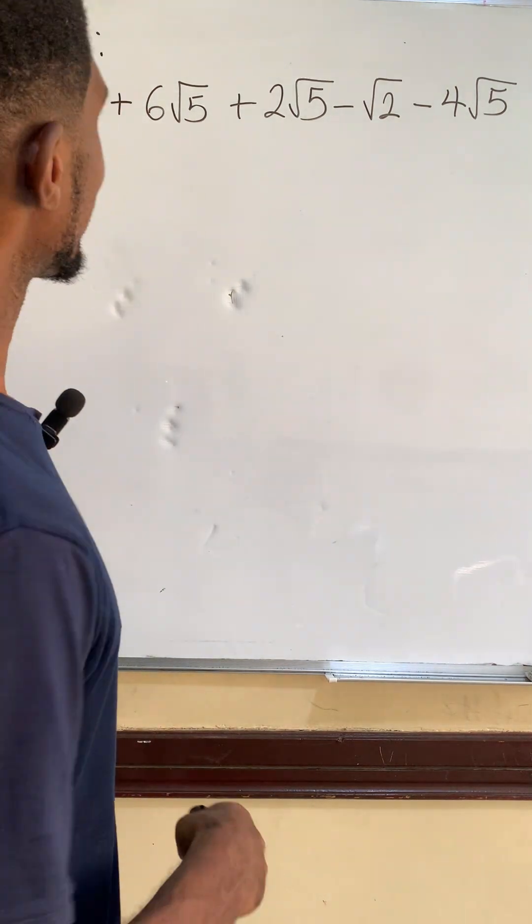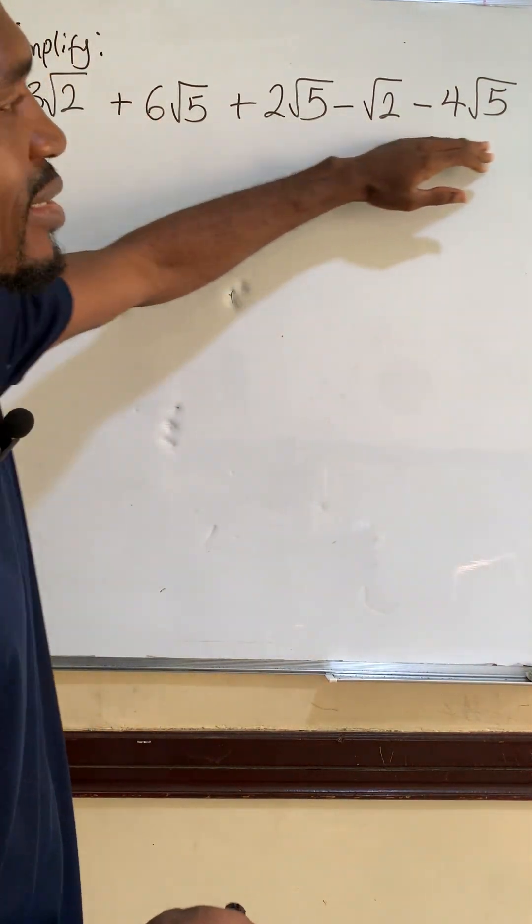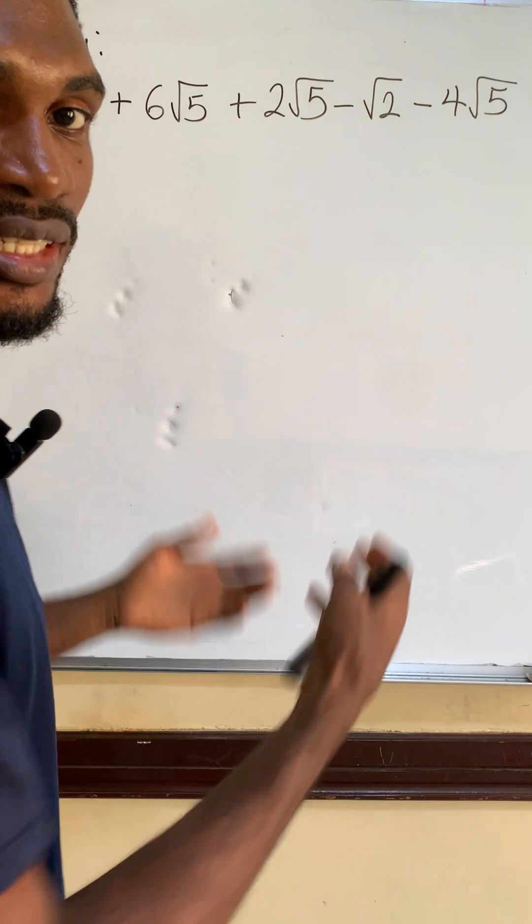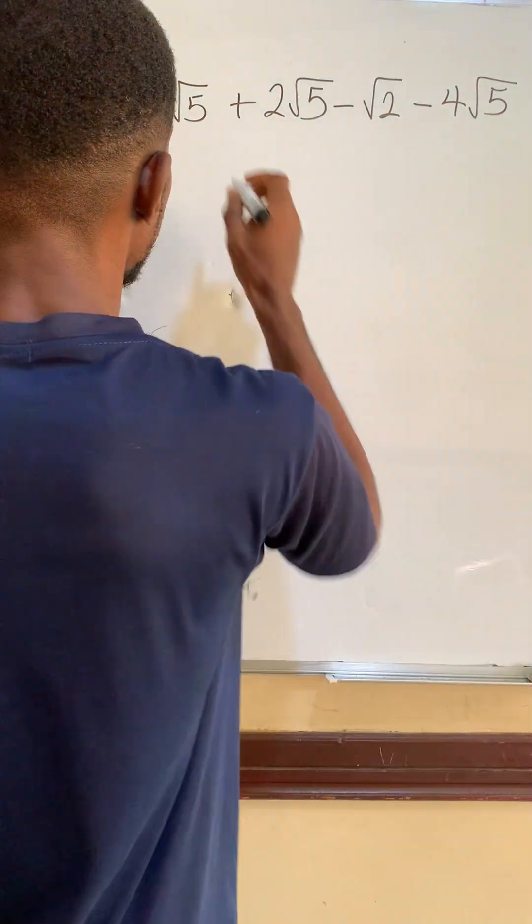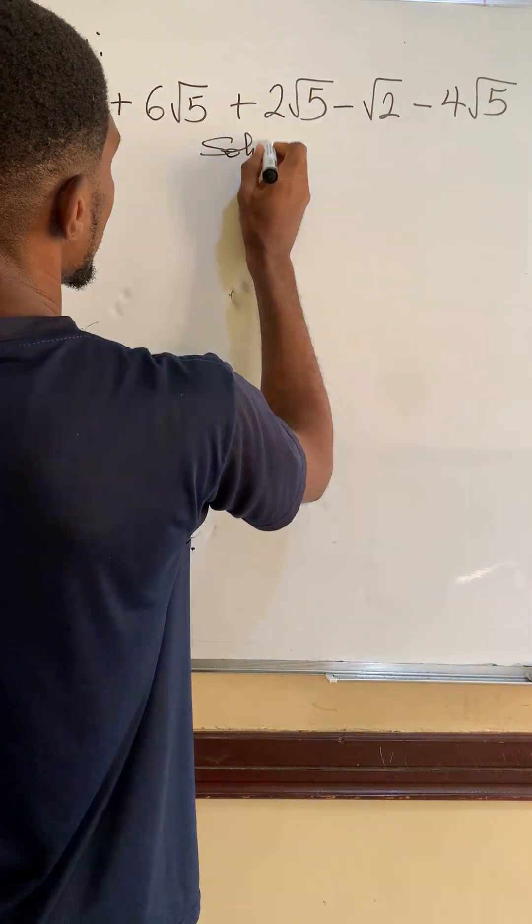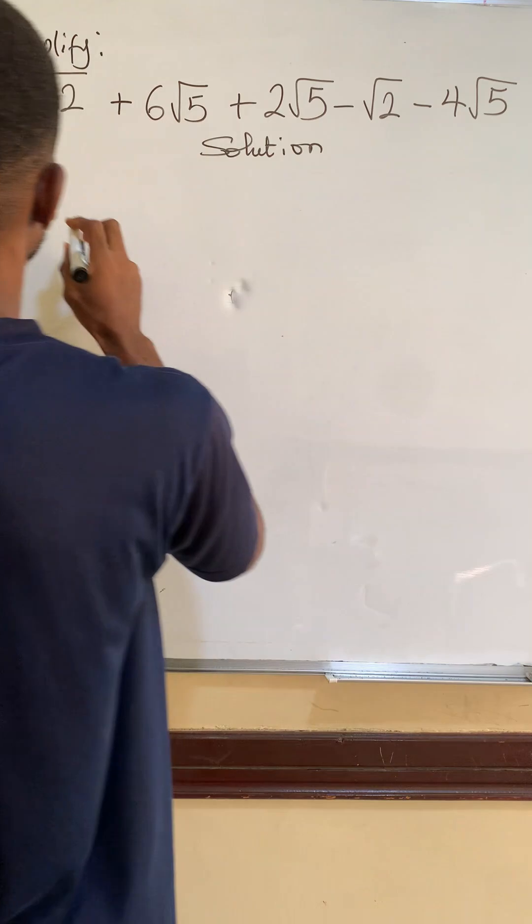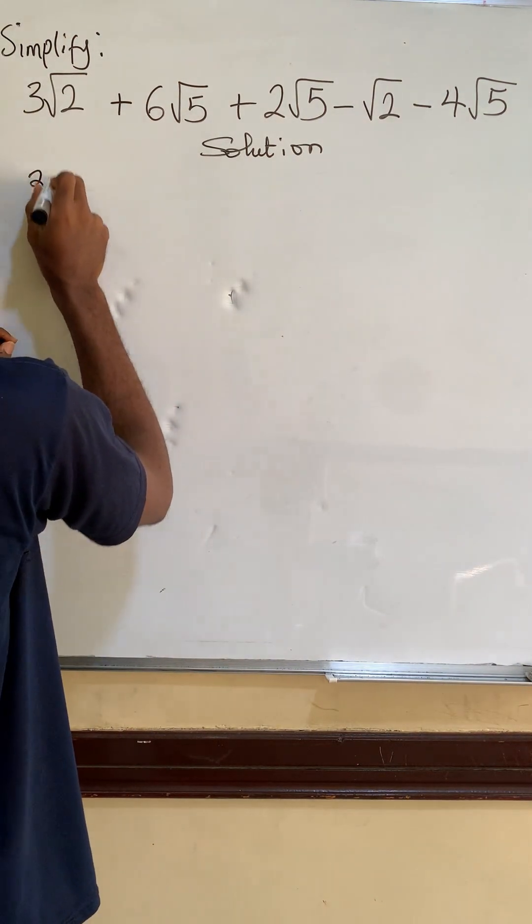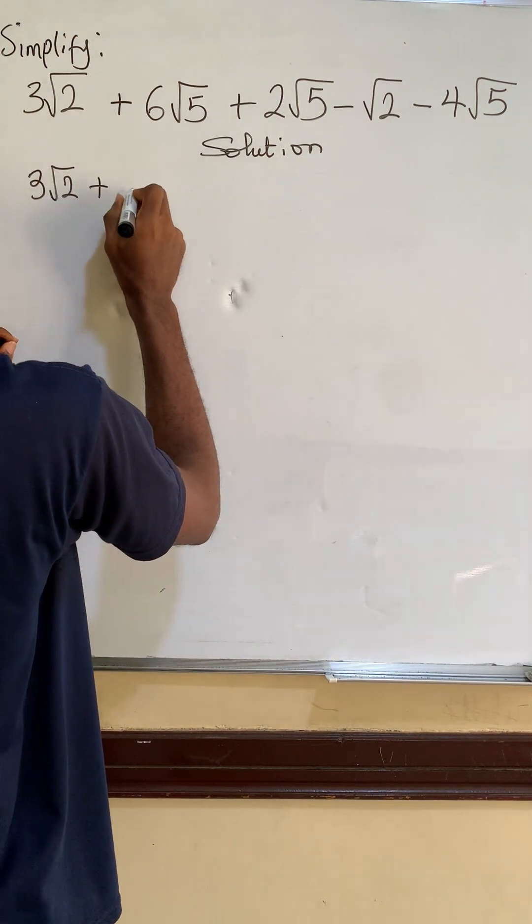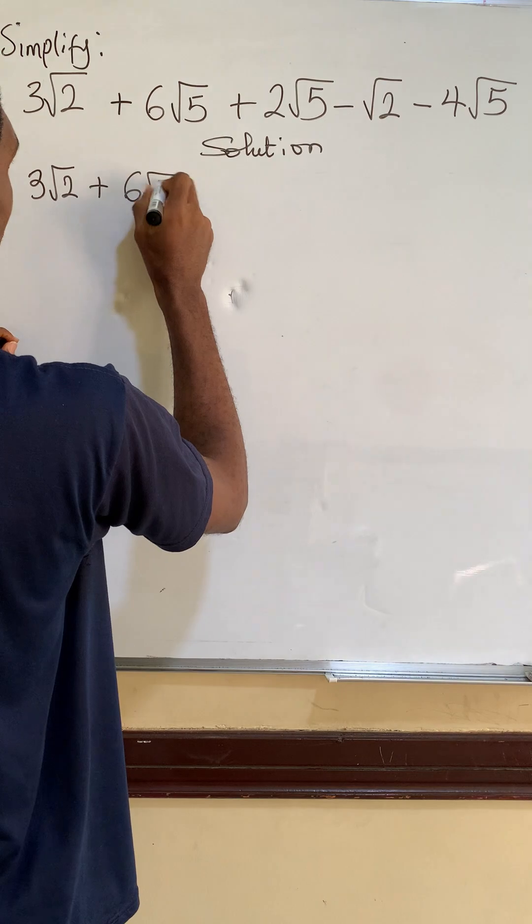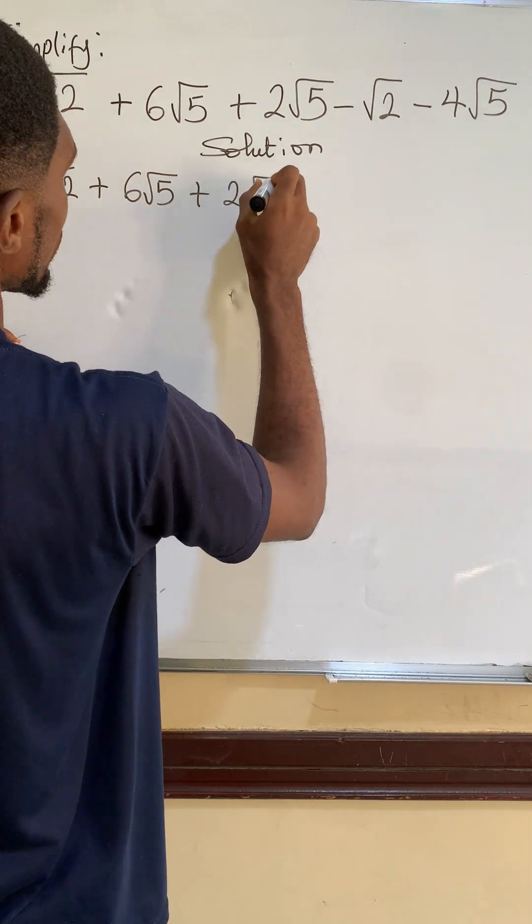Hi, so we're asked to simplify this. Let's solve it. The question again is 3 root 2 plus 6 root 5 plus 2 root 5 minus root 2 minus 4 root 5.